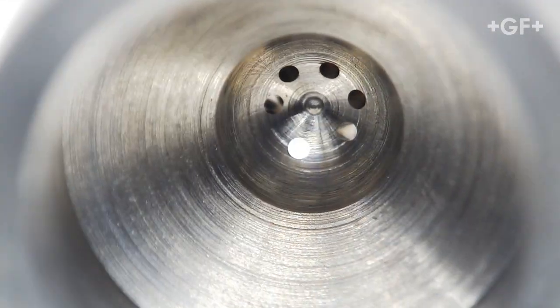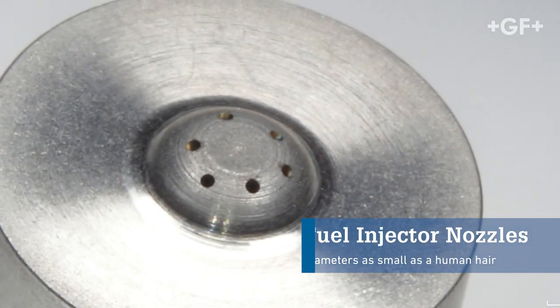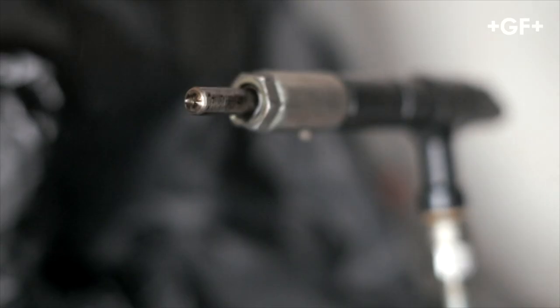Fuel injector nozzles with multiple negative tapered holes with diameters of a human hair in hardened steel, all the exact same size, all in the exact same place, must be produced by the thousands every month.